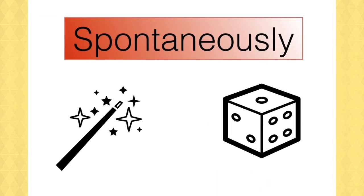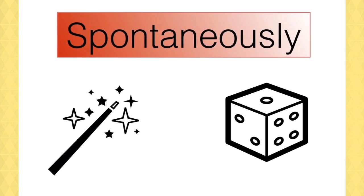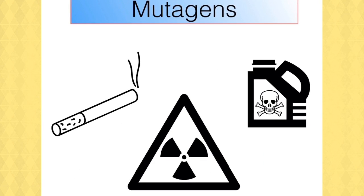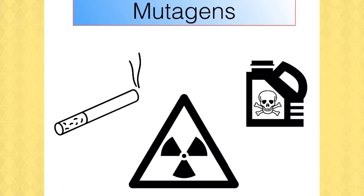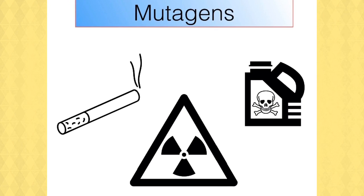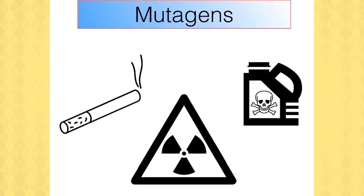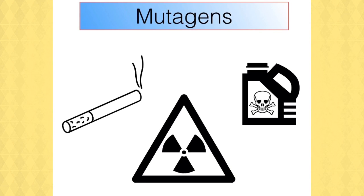The cause of such mutations can be varied. Sometimes they just occur spontaneously. Genetic change can happen because of exposure to mutagenic agents. Mutagens include the chemicals in cigarette smoke, exposure to radiation and exposure to hazardous chemicals also.